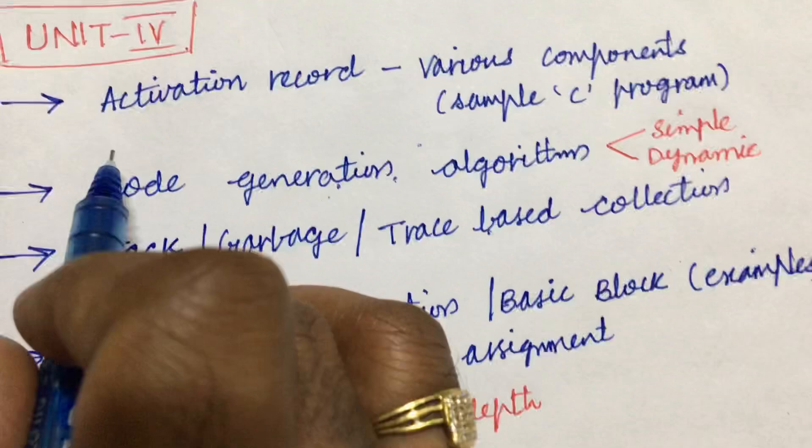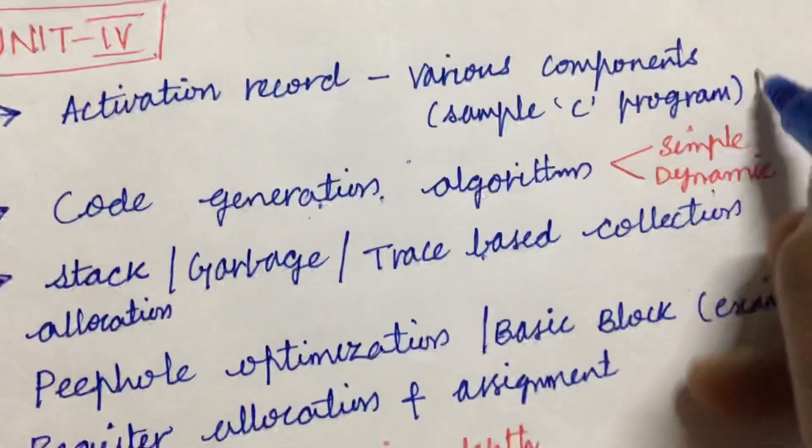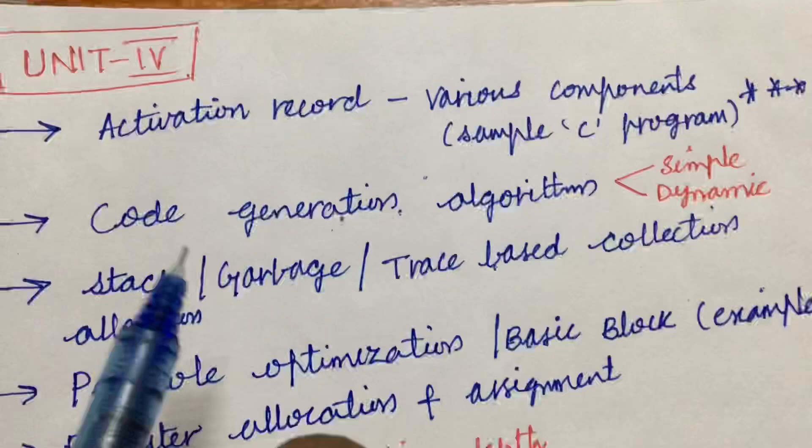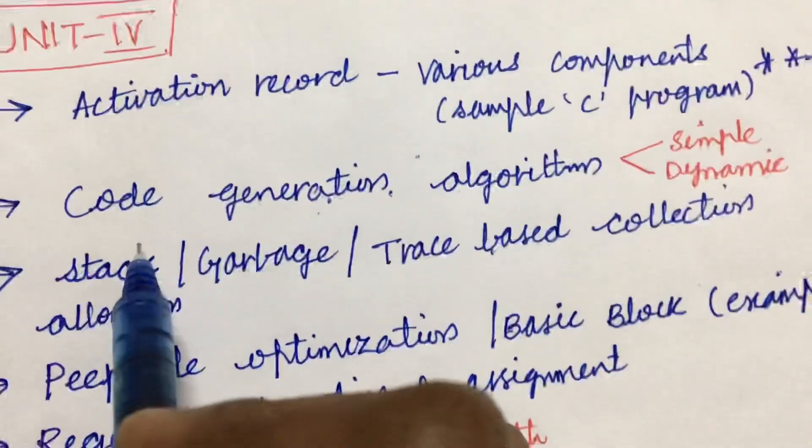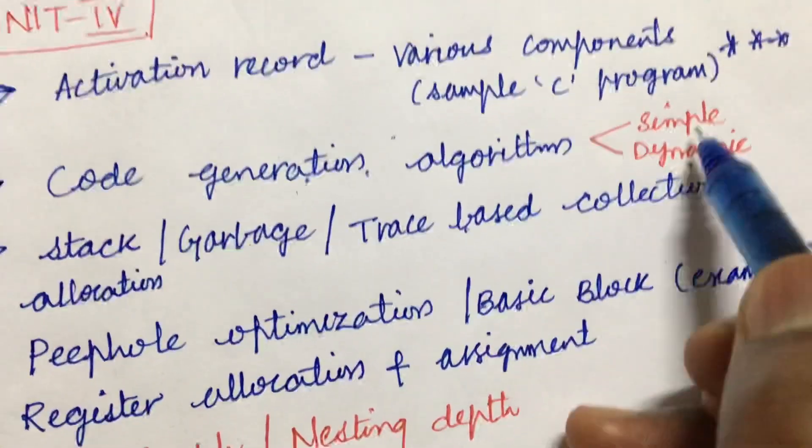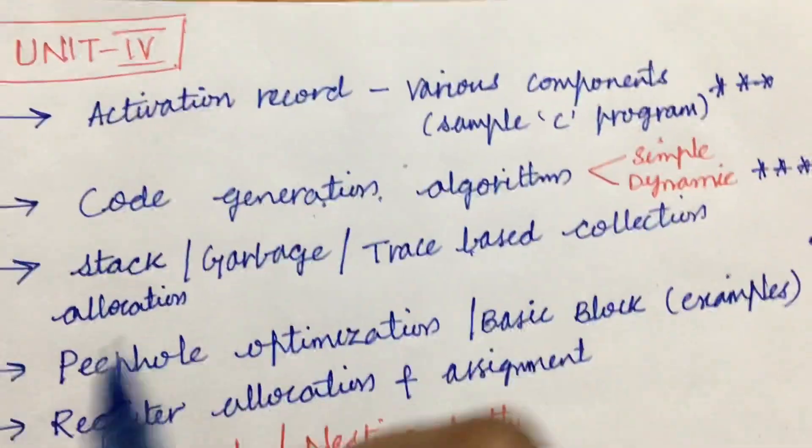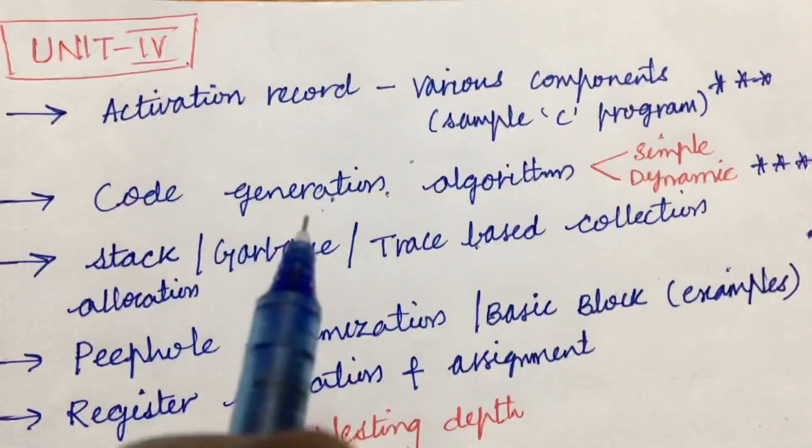This question, according to the activation record, I can expect this is one of the important questions. Later, the code generation algorithm based on simple as well as dynamic is one of the gunshot questions where we can expect only one question from the fourth unit this time.